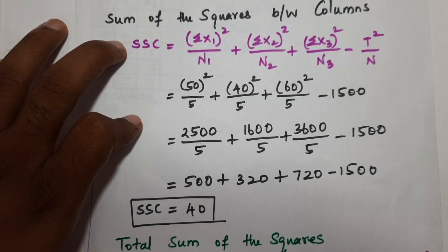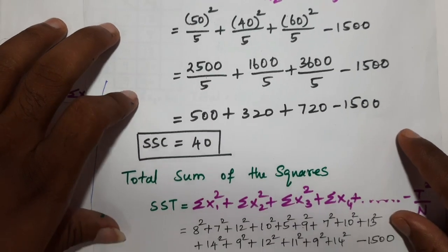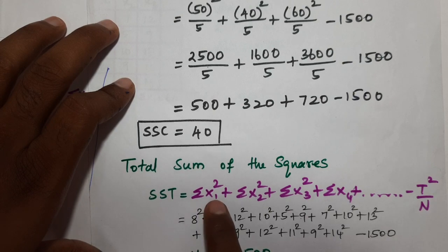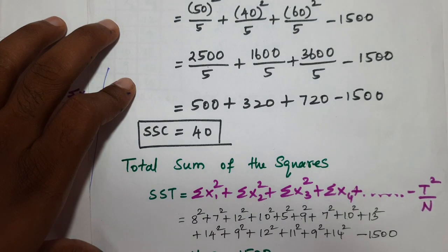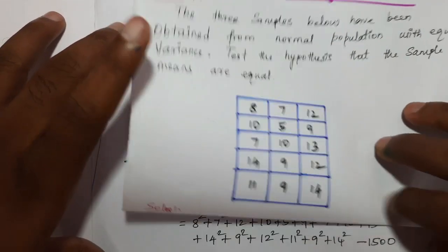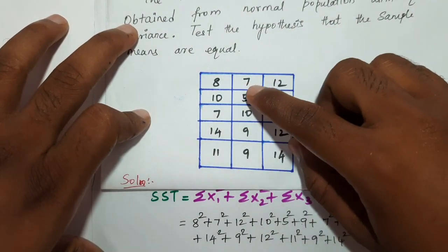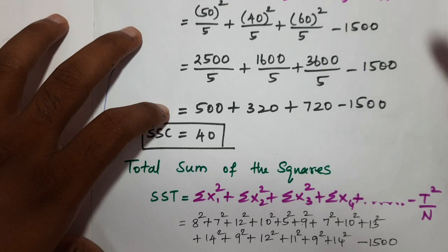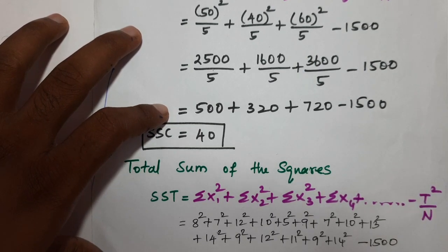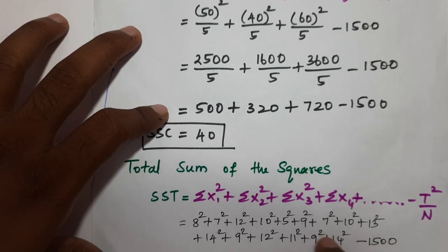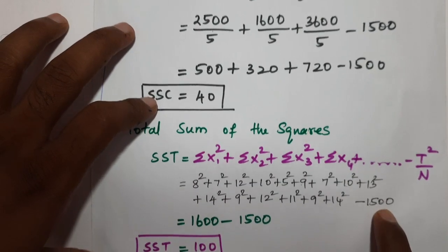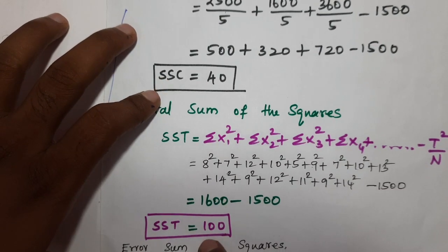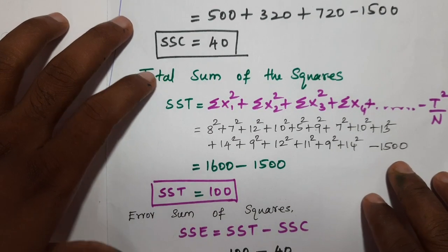Next step: SST (sum of squares of total). The formula is sigma x squared for all values minus CF. Squaring all data values: 4 squared, 8 squared, 7 squared, 12 squared, 10 squared, 5 squared, 9 squared, and so on. Summing all squares gives 1,600, then minus CF of 1500, so SST = 100.